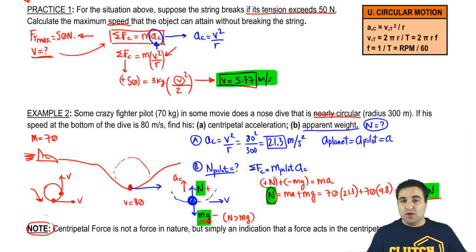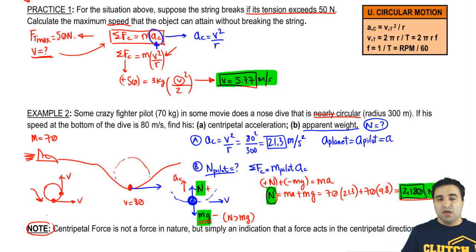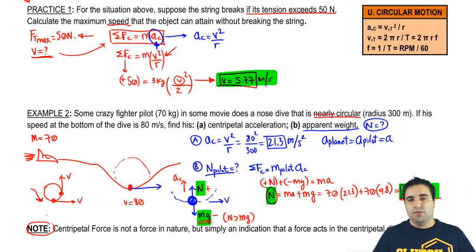Centripetal force is not a force in nature. For example, gravity, or the force of gravity, or weight, is a force in nature. Friction is a force in nature. Normal is a force in nature. You push against the surface, the surface pushes back. Tension is a force in nature, and so on and so forth. Centripetal force is an indication that this force is in a centripetal direction.